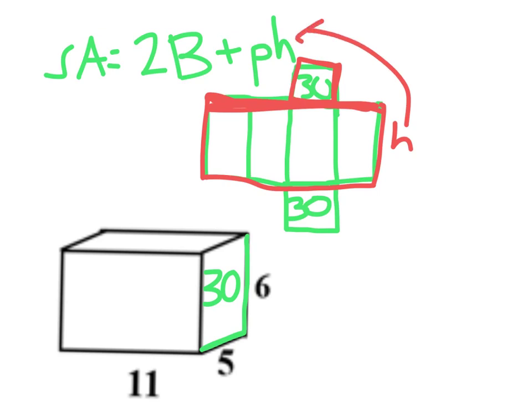There's the height. Here is the perimeter of the base. The area of the base goes there, and we have two of those. So I'm going to go ahead and find the perimeter of that base by taking 5 plus 6 plus 5 plus 6, which is of course 22.